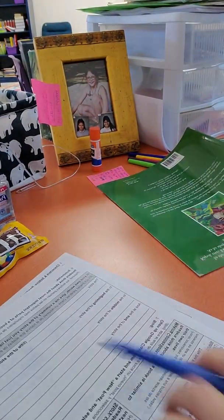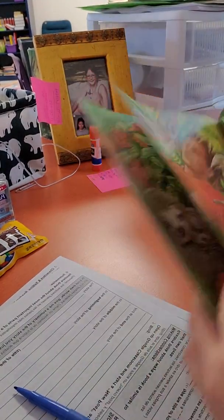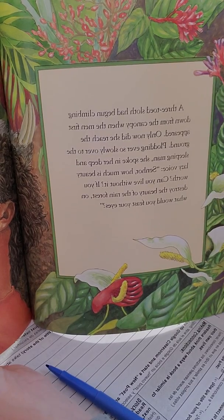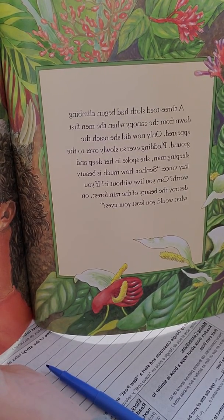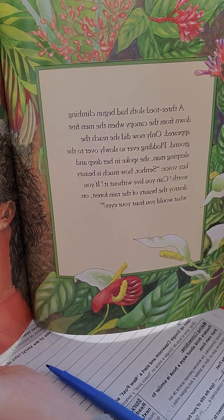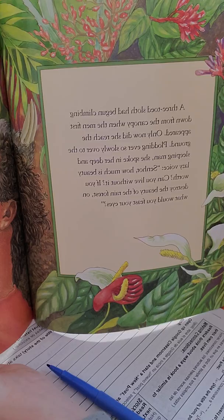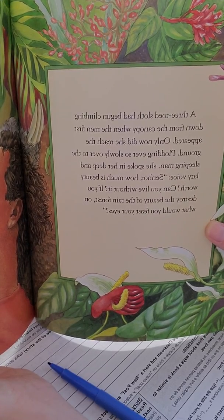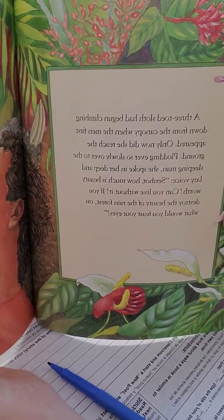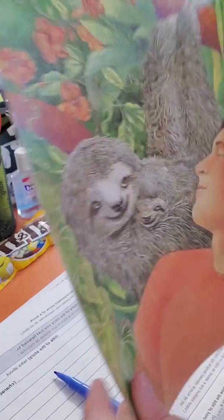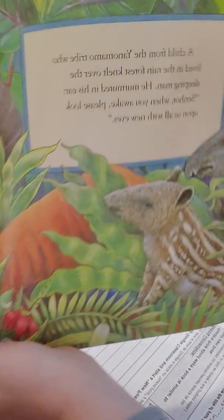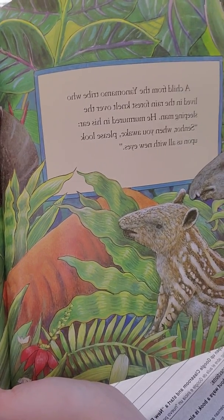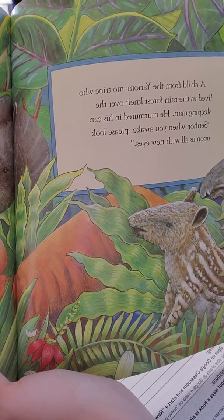And then we're going to move on to the rest of the story. A three-toed sloth had begun climbing down from the canopy when the man first appeared. Only now did she reach the ground. Plodding ever so slowly over to the sleeping man, she spoke in her deep and lazy voice. Senor, how much is beauty worth? Can you live without it? If you destroy the beauty of the rainforest, on what would you feast your eyes?